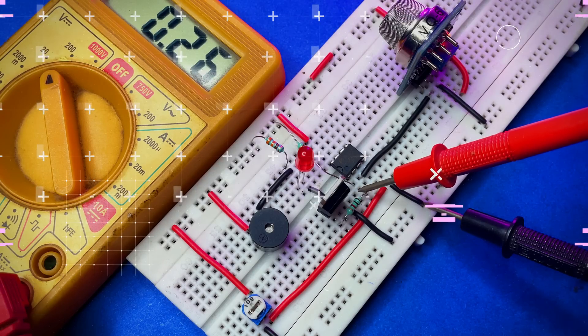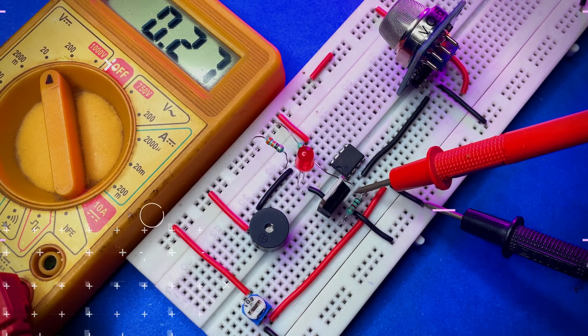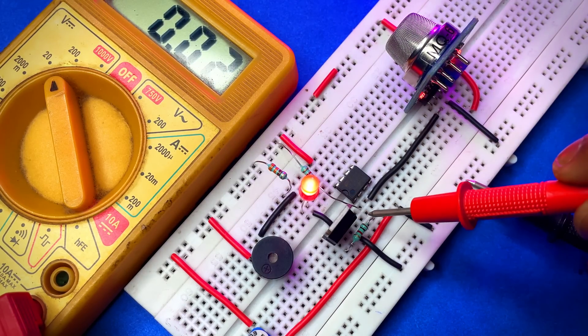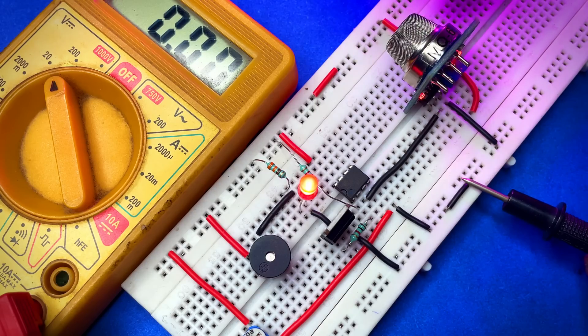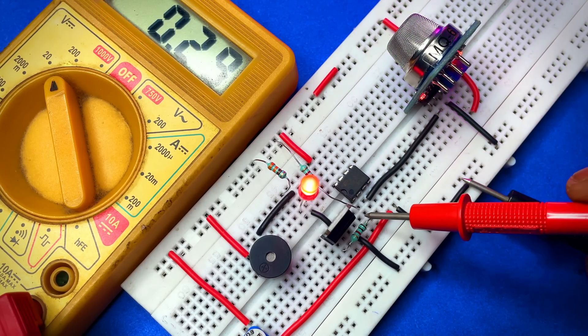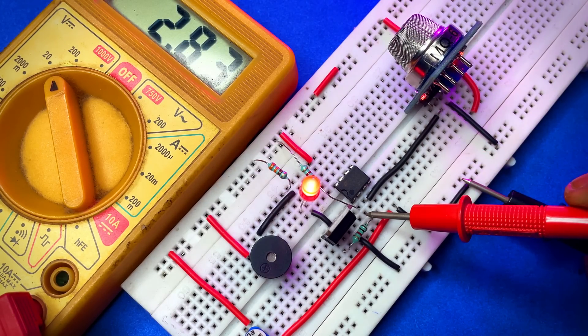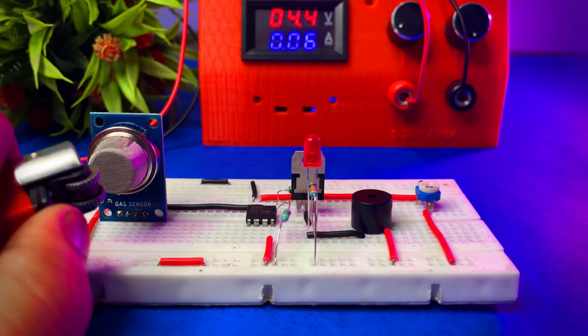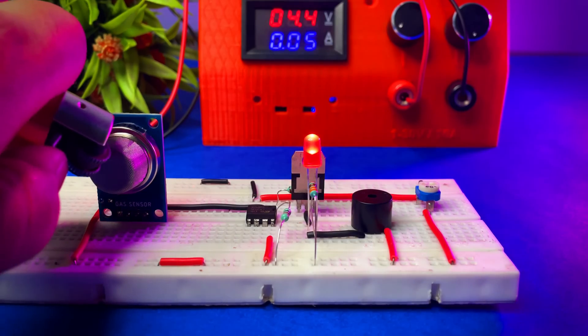Now I'm applying small amount of gas near the sensor and suddenly the voltage increases above 2V. In this condition the output will be high and that's why the LED is blinking. So this is the working principle of open collector of op-amp IC.